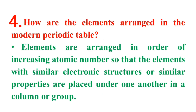Number four: how are the elements arranged in the modern periodic table? Elements are arranged in order of increasing atomic number, so that elements with similar electron structures or similar properties are placed under one another in a column or group.